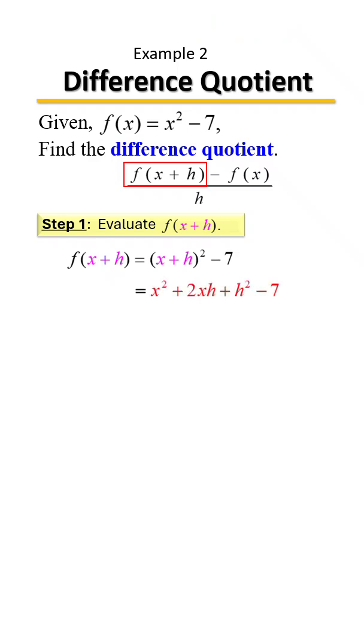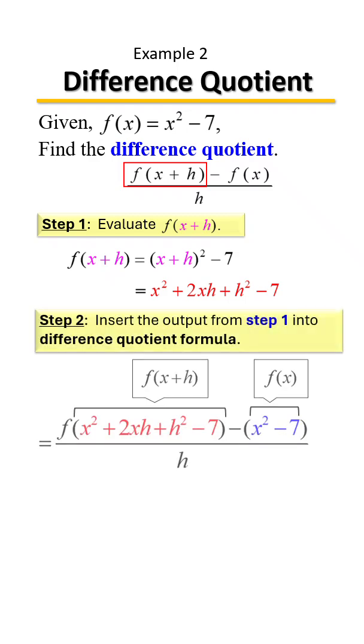So now that we've done the first part of finding f of x plus h, let's plug it now into the difference quotient formula, which is going to look like so. Don't forget that everyone in that second group has to be changed to their opposite because they have a negative in front of it.